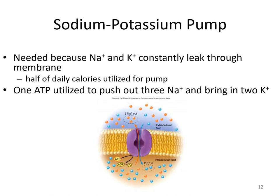The sodium-potassium pump is a carrier protein found in our cells that utilizes ATP — it requires cellular energy. This pump is needed because the cell membrane is slightly permeable to both sodium and potassium ions, which constantly leak through the membrane. Notably, about half of the daily calories we consume are utilized just for this sodium-potassium pump — it is critically important. One ATP molecule is used to push out three sodium ions and bring in two potassium ions. Both sodium and potassium are positively charged.